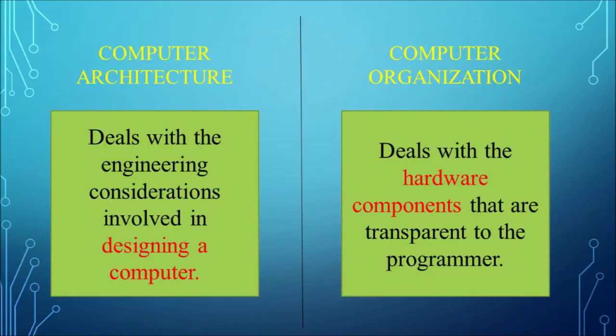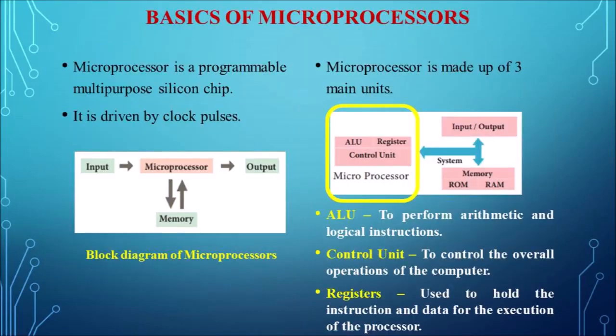The term computer organization looks similar to computer architecture. But computer architecture mainly deals with the designing of a computer — what engineering considerations are involved in designing it, and how the computer is designed. On the other hand, computer organization deals with the hardware components that are transparent to the programmer. These are the major differences between computer organization and computer architecture.